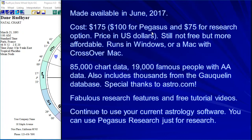The Pegasus research software comes in two parts: the Pegasus program, which costs $100 in American dollars, and the research option for $75, so the total is $175. Still not free, still not extremely inexpensive, but much less expensive, more powerful, more elegant, and more fun than what we've had before. We just released this research option last month in June 2017. We're making available 85,000 chart data, including about 19,000 famous people with AA accuracy from birth certificates, the Gauquelin database, thousands of other charts, fabulous research features, and tutorial videos.